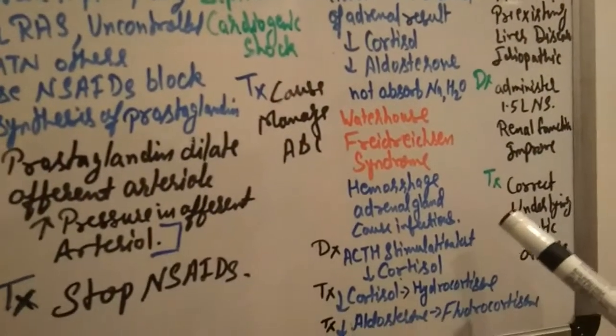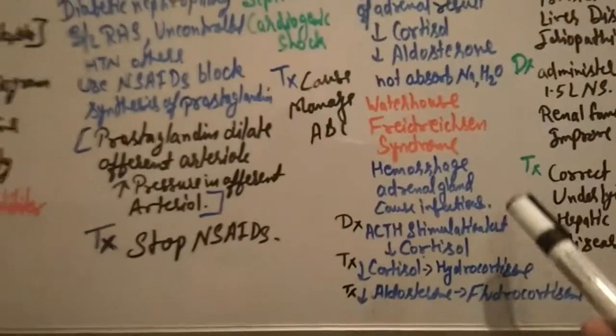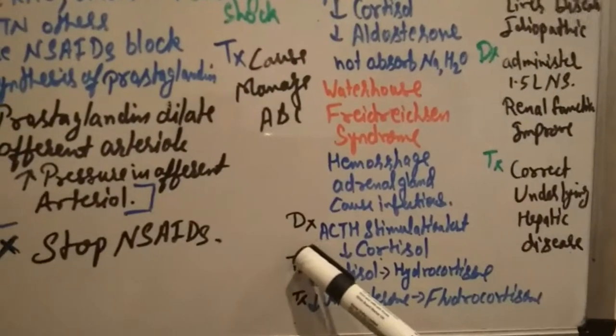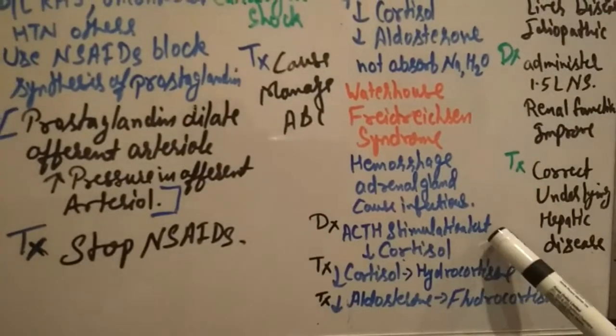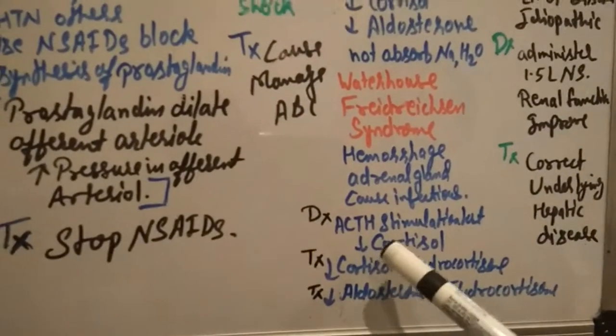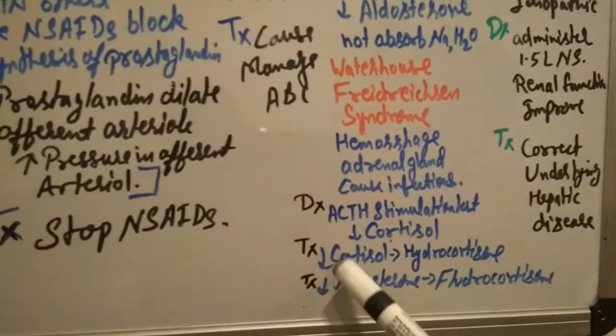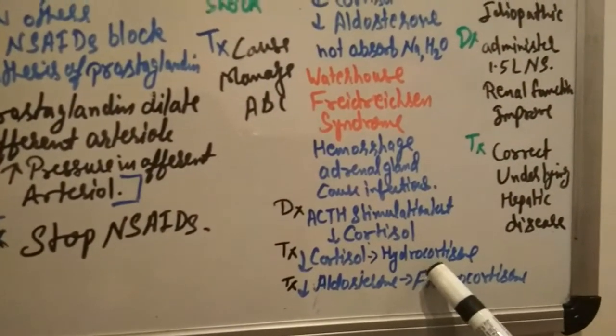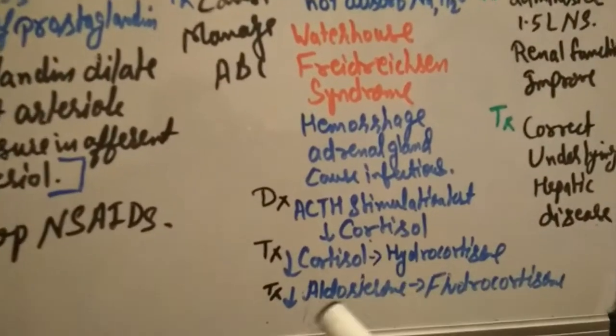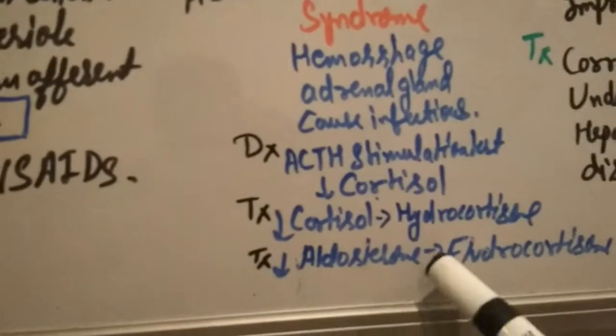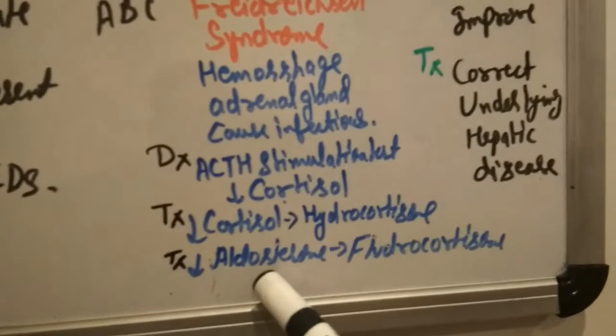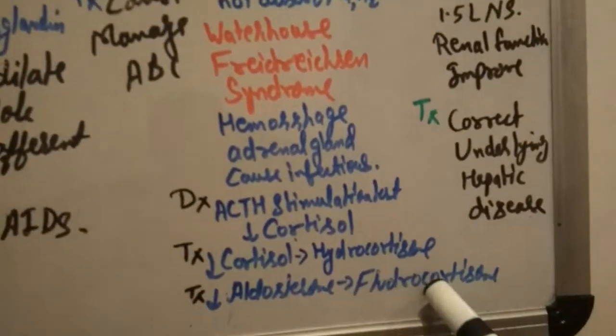Have you ever heard about Waterhouse-Friderichsen syndrome? Very important. There is a hemorrhage to the adrenal gland due to infectious causes. It also causes hypoaldosteronism. How to diagnose? Diagnose by ACTH stimulation test and we see the decreased level of cortisol there. So how to treat? If cortisol decreases we need to replace with hydrocortisone 100 mg or 200 mg doses.